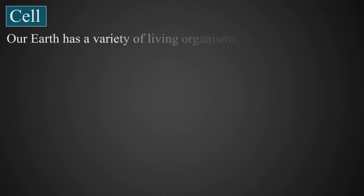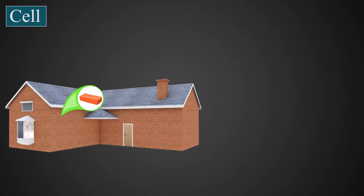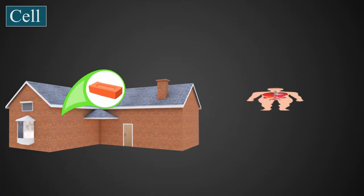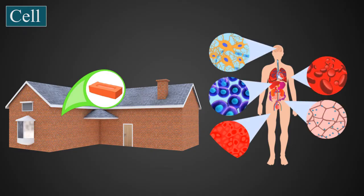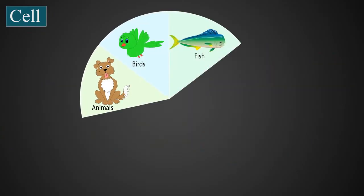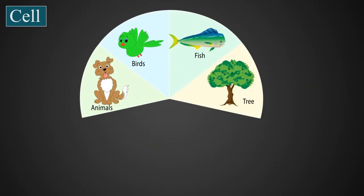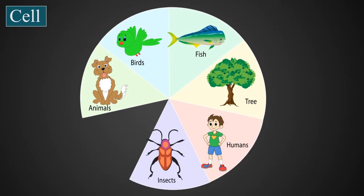Our earth has a variety of living organisms. Just like how a house is made up of bricks, a living organism is made up of cells. All animals, birds, fish, all kinds of plants and trees, humans, insects,